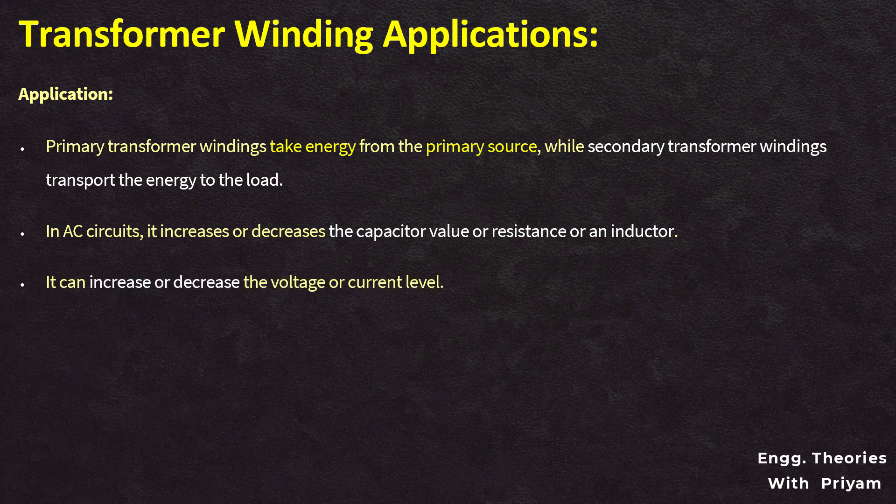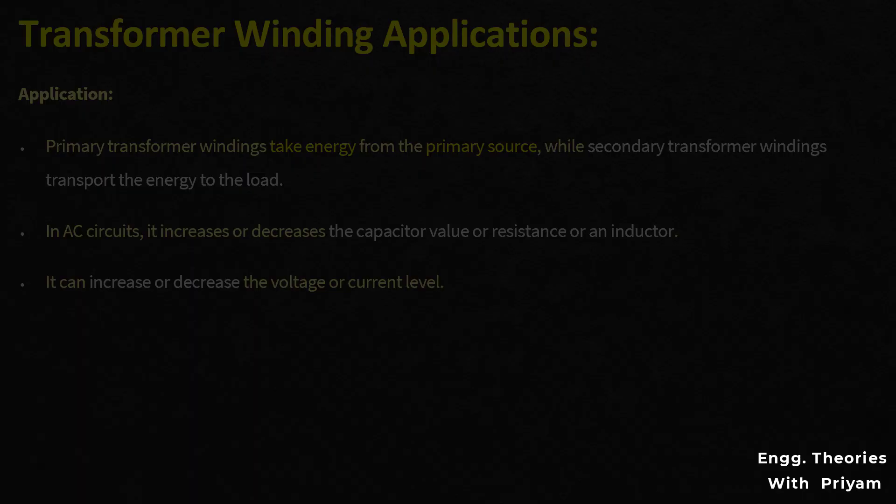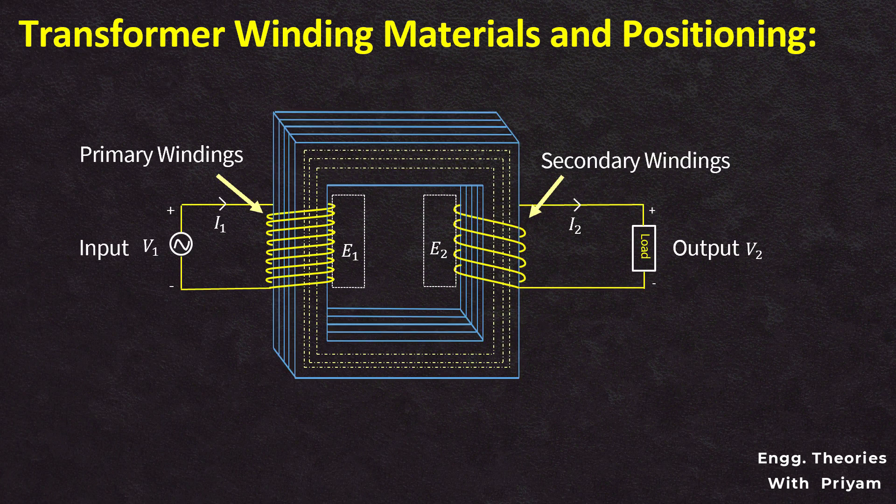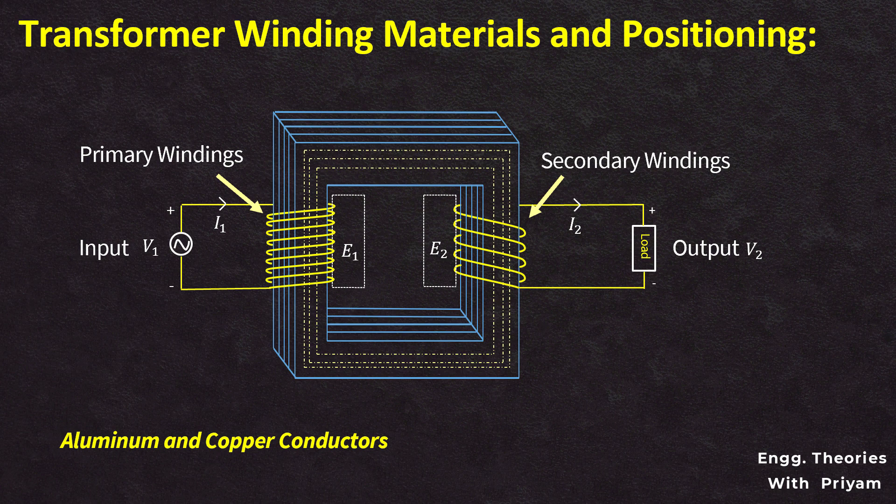Transformer winding materials are aluminum and copper, which are the most frequently used conductors. The mechanical strength and conductivity are high for copper, whereas aluminum materials are less cost and lightweight compared to copper.